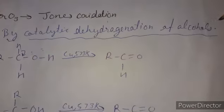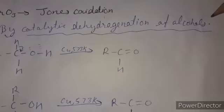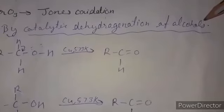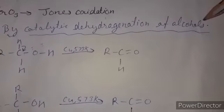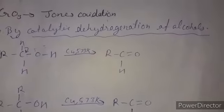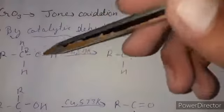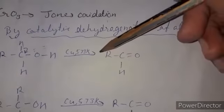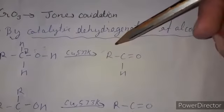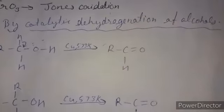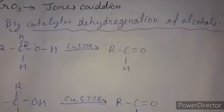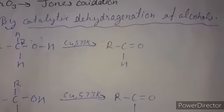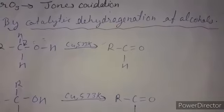The next method is catalytic dehydrogenation of alcohols, which we already discussed in the chemical properties of alcohols. Primary alcohol reacted with copper at 573 K gives aldehyde; secondary alcohol gives ketone; and tertiary alcohol gives alkenes, which do not change into aldehyde or ketone.